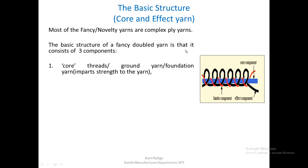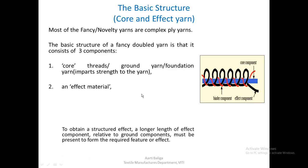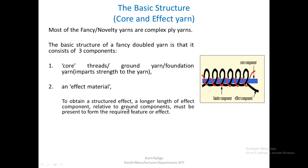The basic structure of a fancy doubled yarn consists of three components. The first is the core, also known as the ground or foundation yarn, which imparts strength. The second is the effect material, shown in black. To obtain a structured effect, a longer length of effect component relative to the ground component must be present to form the required feature, as the effect projects out of the base yarn structure.